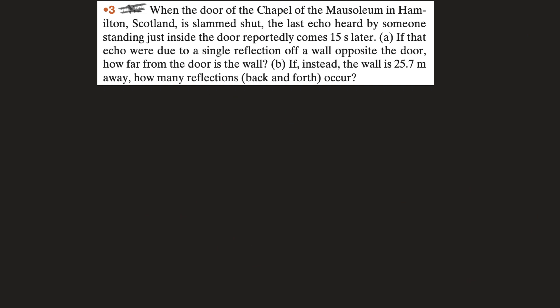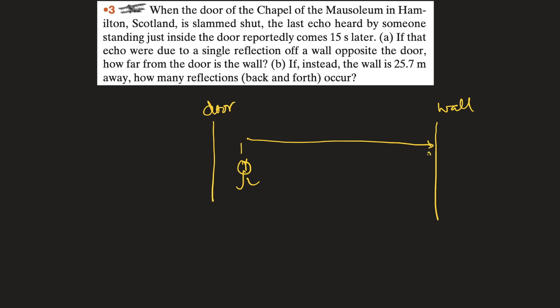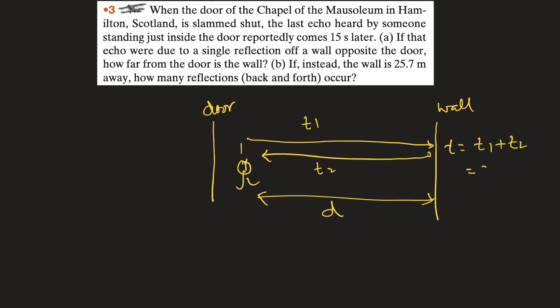Problem number three: when the door of the chapel of the mausoleum in Hamilton, Scotland is slammed shut, the last echo heard by someone standing just inside the door reportedly comes 15 seconds later. If that echo were due to a single reflection off a wall opposite the door, how far from the door is the wall? Let us suppose this is the wall, the door, and here is the listener. The sound travels to the wall in time t1 and returns in time t2, so total time is t1 + t2 = 2t1 = 15 seconds.